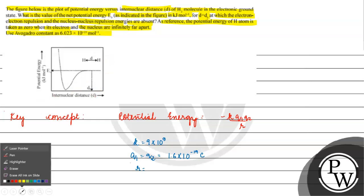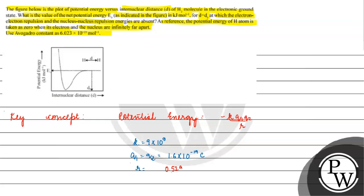The Bohr radius is equal to 0.529 n square by z. n and z are both equal, so the radius will come 0.529 into 10 to the power of minus 10 meters. So we have k, q1, q2, and r.